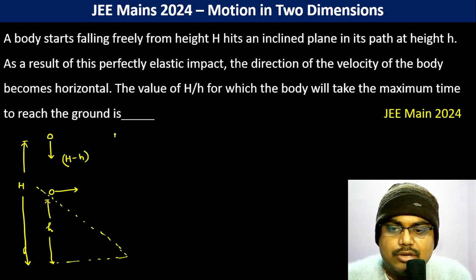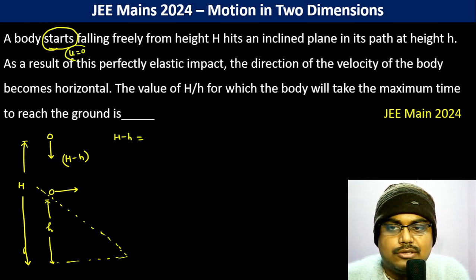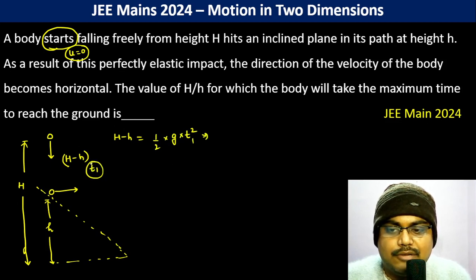So H minus h is equal to, initial velocity was zero because it starts falling freely, so half into G into T square. T1, so T1 becomes root over 2 H minus h divided by G.